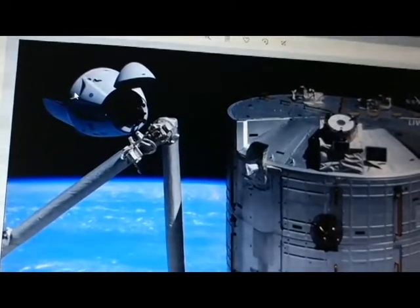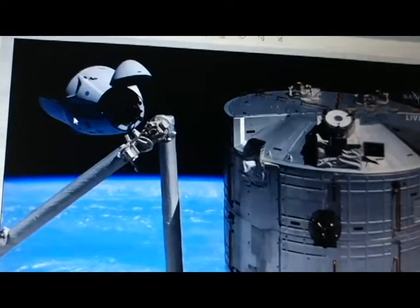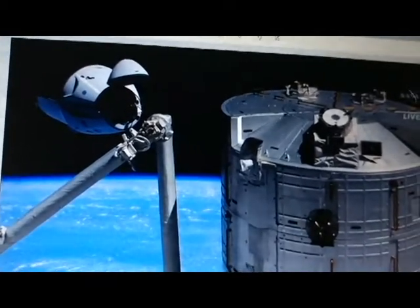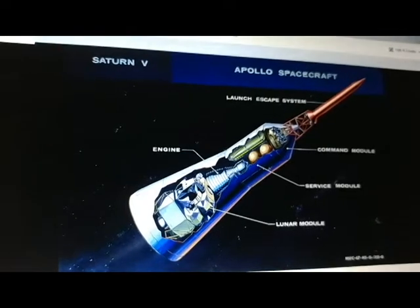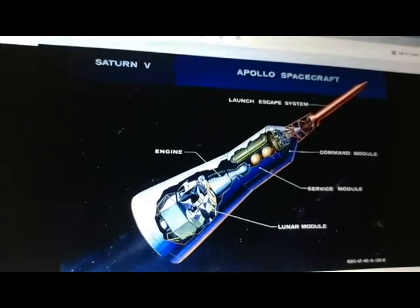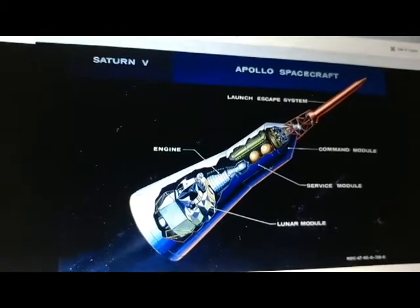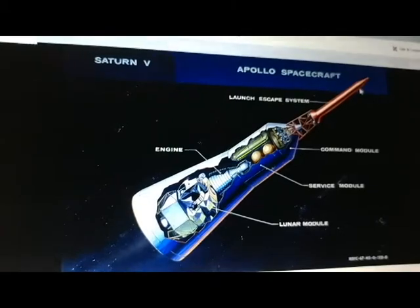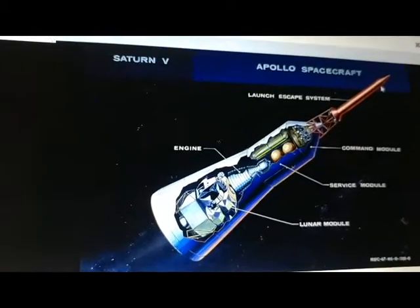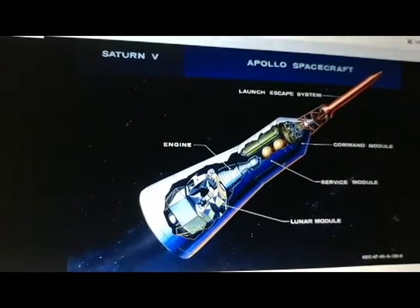Also noticed, well everybody knows this, instead of having like the Apollo ejection tower on top, the Crew Dragon has the ejection rocket at the sides. So here, probably in Apollo, when they remove this, when they discard the launch escape system, the nose cone will be discarded and won't be able to reuse.